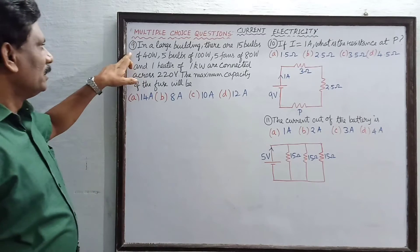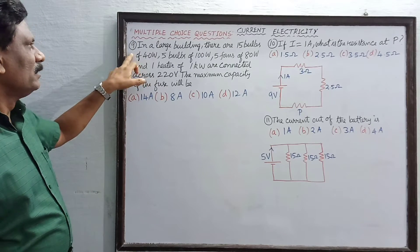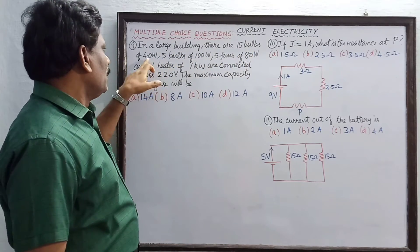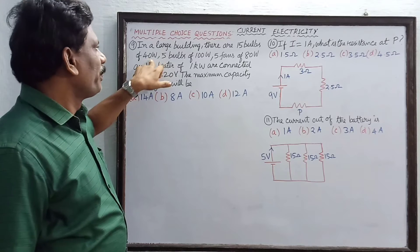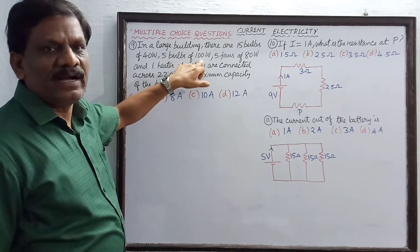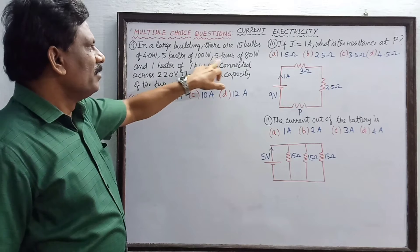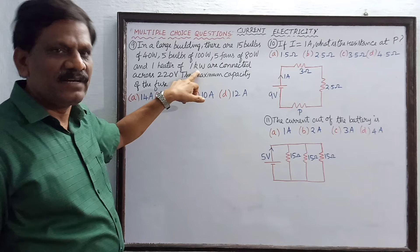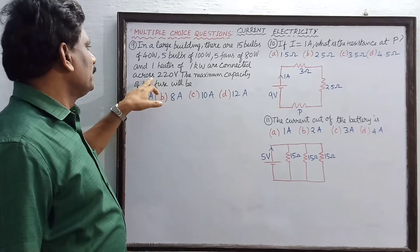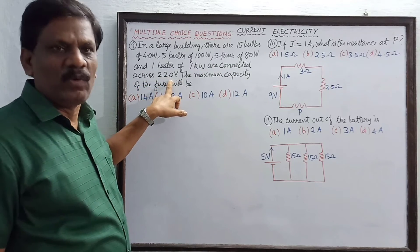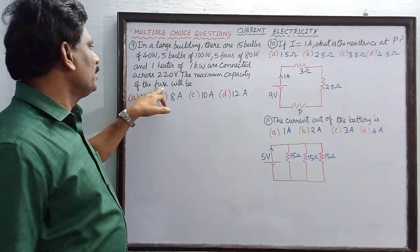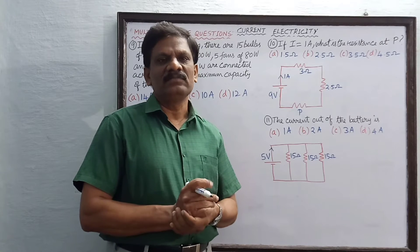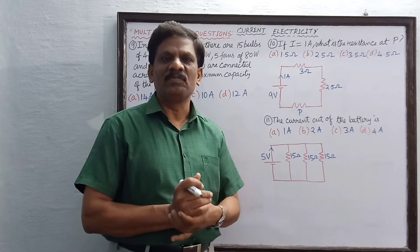Hi students, MCQ number 9. In a large building there are 15 bulbs of 40 watts each, 5 bulbs of 100 watts each, 5 fans of 80 watts each, and 1 heater of 1000 watts (that is 1 kilowatt), all connected across a 220 volt supply. The question asks: what is the maximum capacity of the fuse? That is, we need to find the current value.